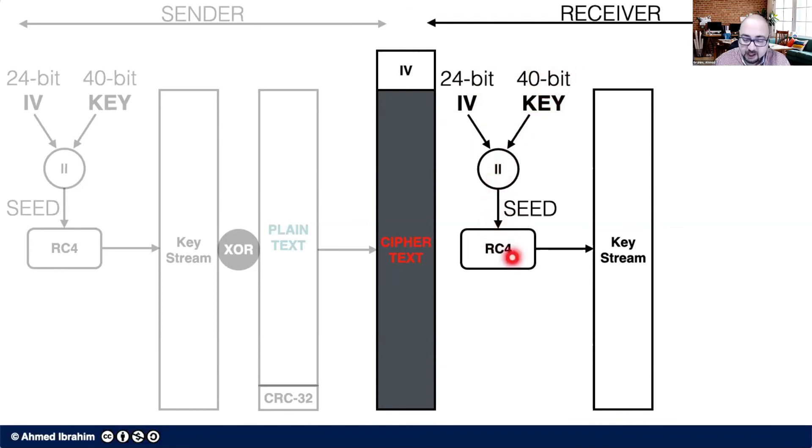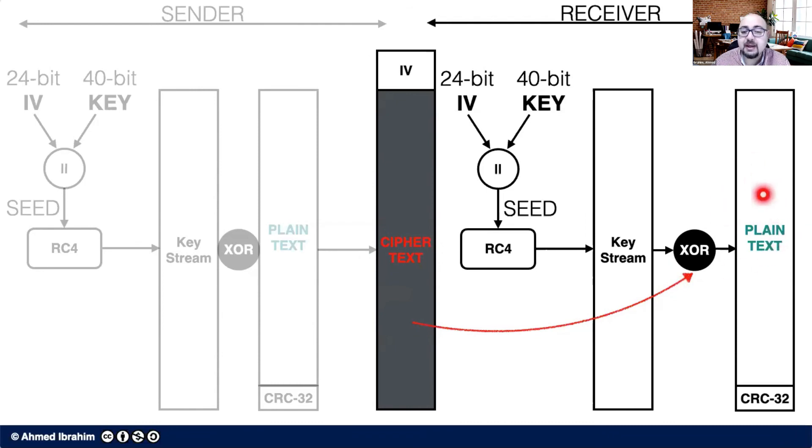have the seed for RC4 and now they can generate the same key stream that was used by the sender. And then they XOR this key stream with the ciphertext to obtain the plain text back. How does that sound?